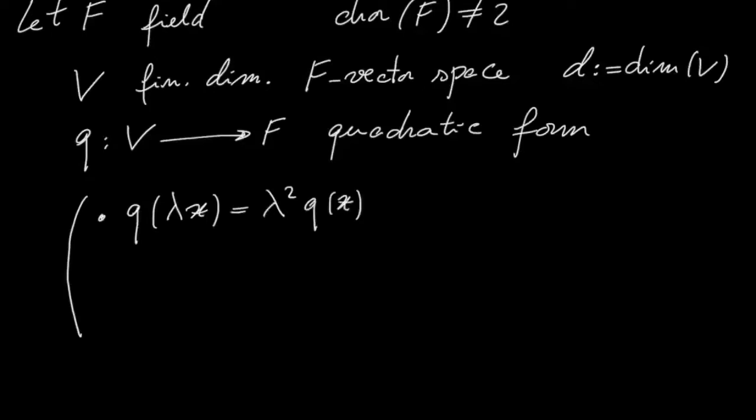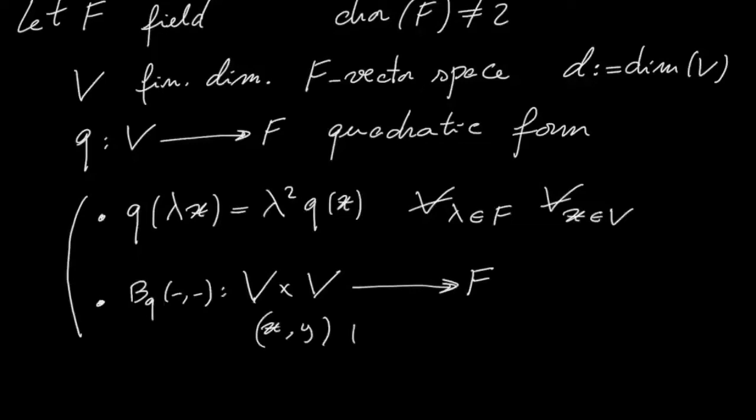So we have this equality for every scalar and every vector in V. And also we can consider this associated map from V cross V to F that sends this pair to the following element.